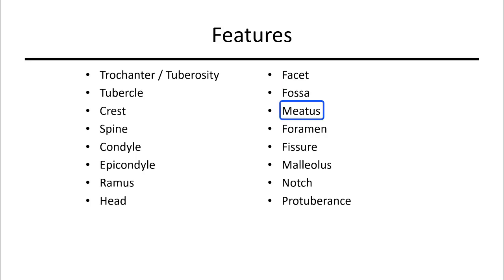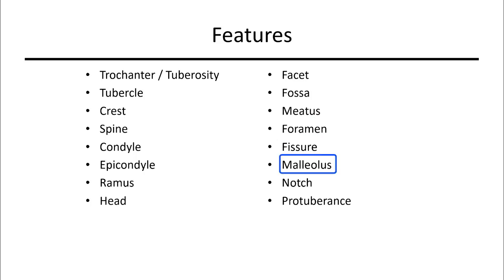A meatus is a bit like a tunnel. A foramen is a hole through a bone — it's usually round. A fissure is a slit or crack between two bones. Malleolus is specific to your two ankle bones; they are actually inferior protuberances of your lower limb bones. A notch is a U-shaped depression in a bone, seen in parts of our pelvis. A protuberance is a piece of bone that is sticking out.